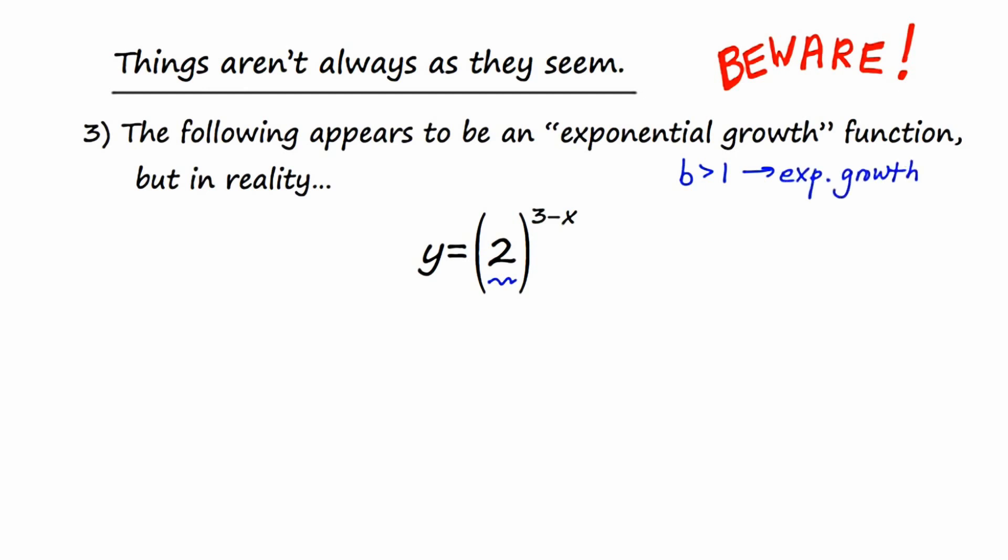However, if we do a little bit of manipulation, we're going to get a different outcome than you may have thought. So one of the goals when you're trying to graph is that before you graph, you want the coefficient of x to be positive 1, and right now you'll see that it's negative 1. So I'm going to do a few manipulations, and something pretty interesting is going to happen.